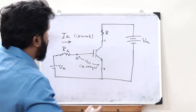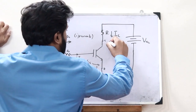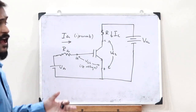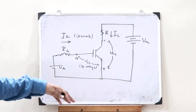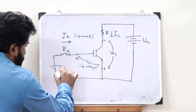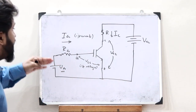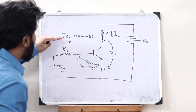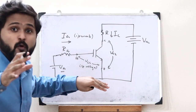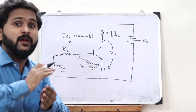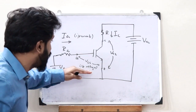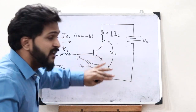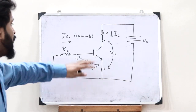The current flowing through the collector resistance is IC, and the voltage across the collector and emitter is VCE. This circuit shows the basic working of an IGBT connected to voltage source VG and VCC. As the input voltage VGE is increased, the input current IG also increases, and consequently the collector current IC increases as well, causing VCE to decrease.